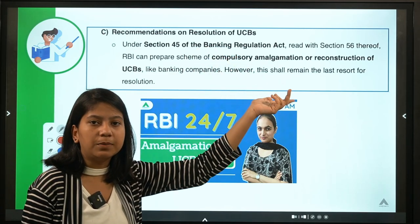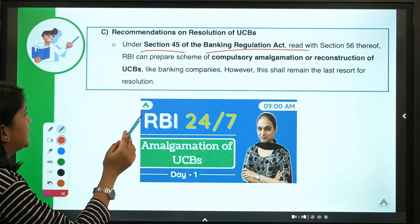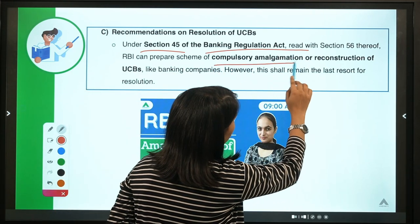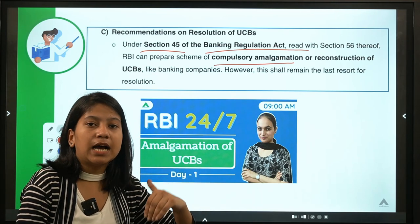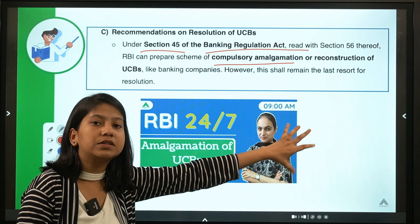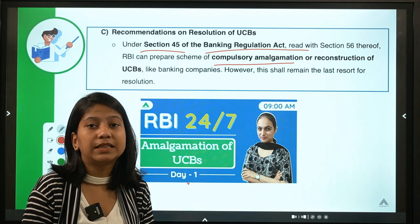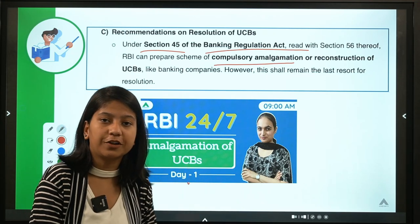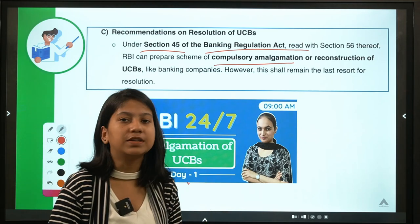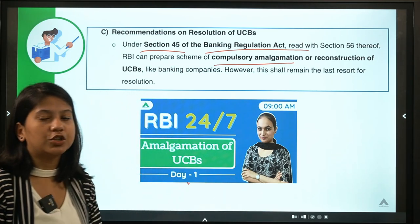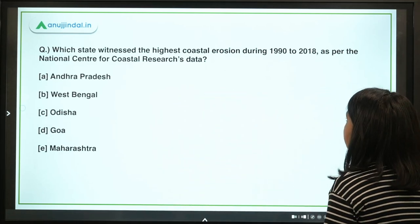Regarding resolution of UCBs that become insolvent: under Section 45 of the Banking Regulation Act, read with Section 56, RBI can compulsorily amalgamate or reconstruct the UCB. The conditions under which RBI is allowed to do so are covered in a separate video on amalgamation of urban cooperative banks, which is recommended viewing after this session.